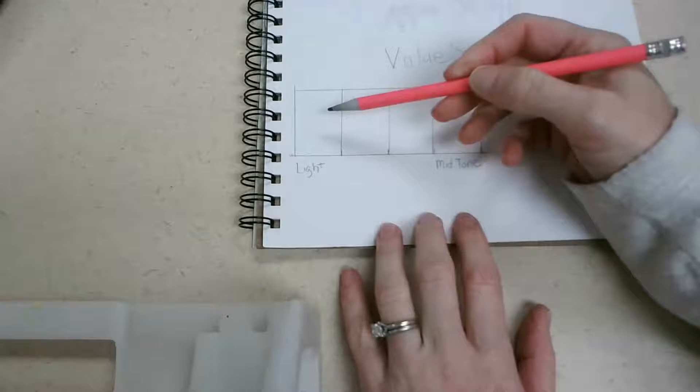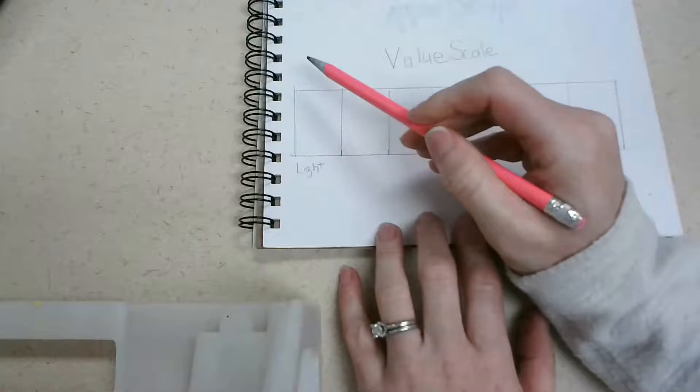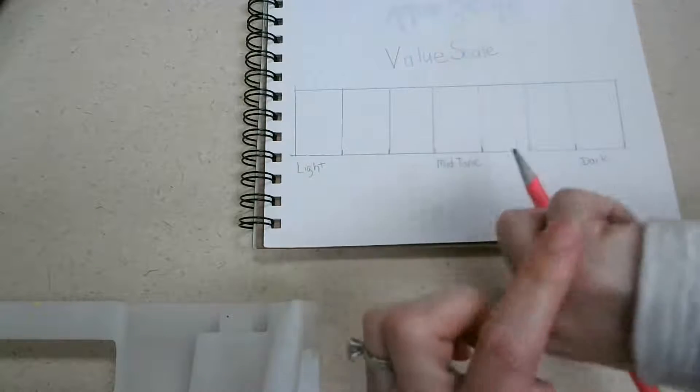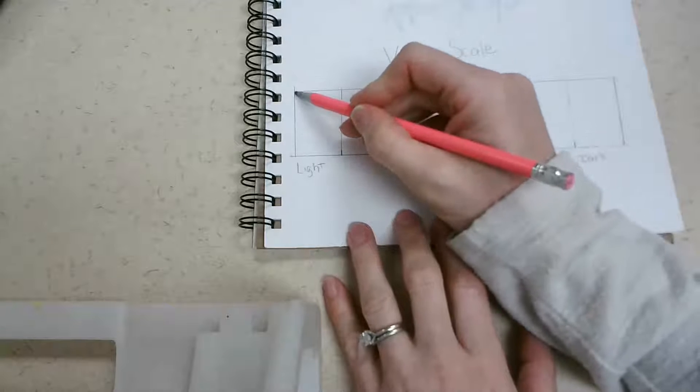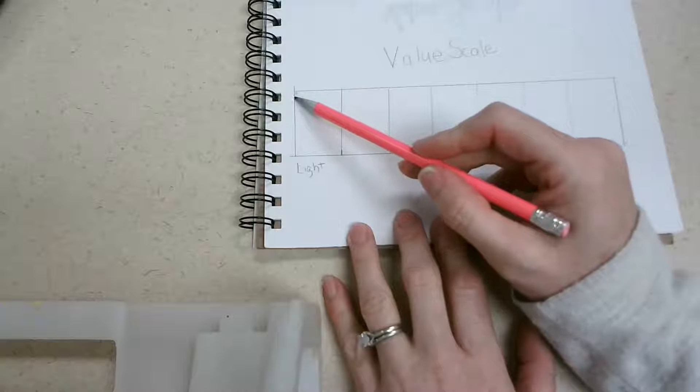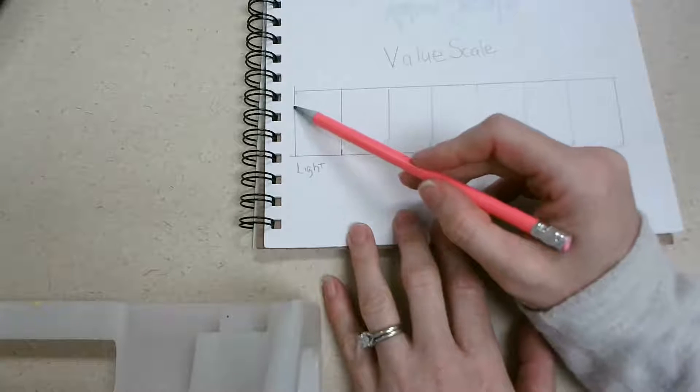So I like to start with my lightest and then work my way to my darkest. One reason is as you're drawing or writing, when you drag your hand across it, you get your pencil all over your hand. Another reason is I think it's easier to darken things up than it is to lighten things up.